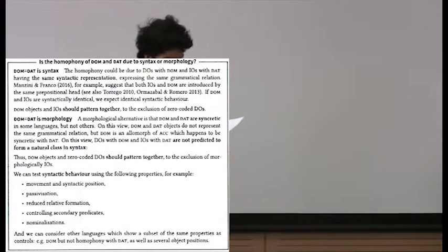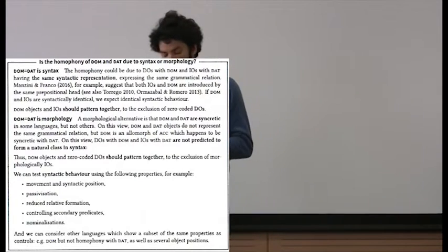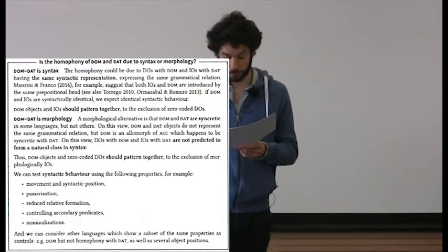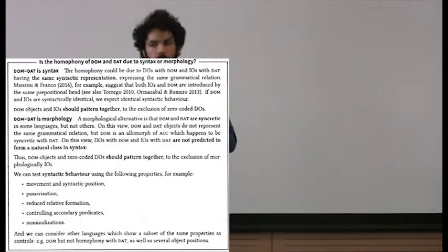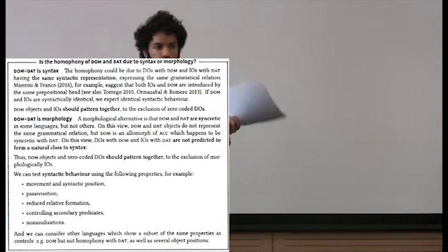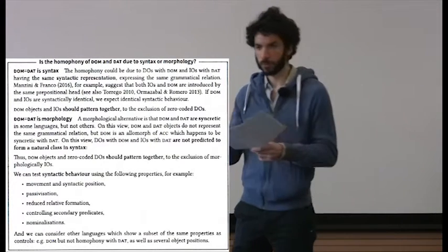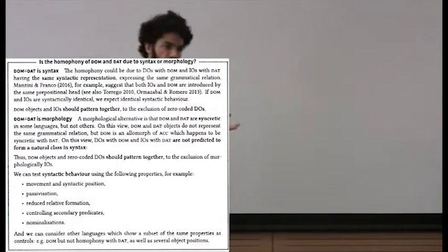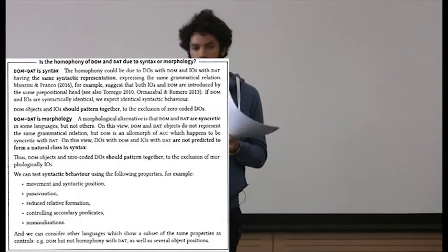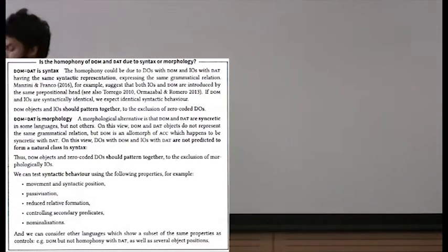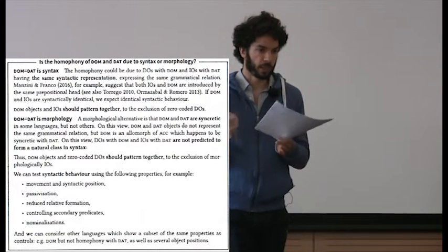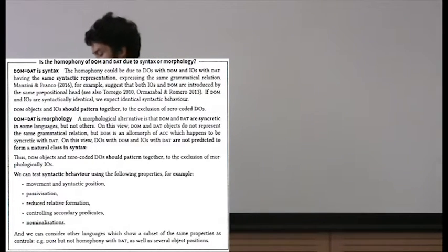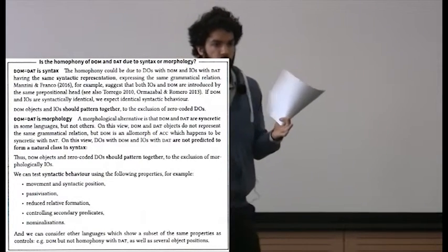This is what some people have suggested, particularly for Spanish and Romance languages, with the logic supposed to hold for other languages as well. If this is true, we would expect objects with differential object marking and indirect objects to behave alike in syntax. The other hypothesis is that the homophony is simply due to morphology — these languages happen to have a differential object case marker which just accidentally is syncretic with dative case. Nothing in syntax tells us these two things should be identical, but they come out identical in morphology.